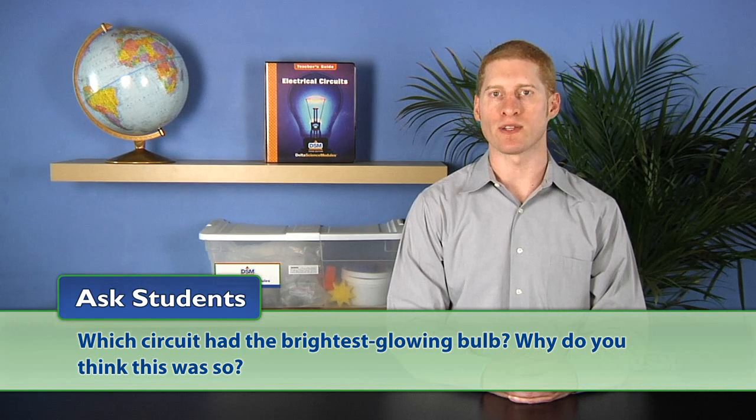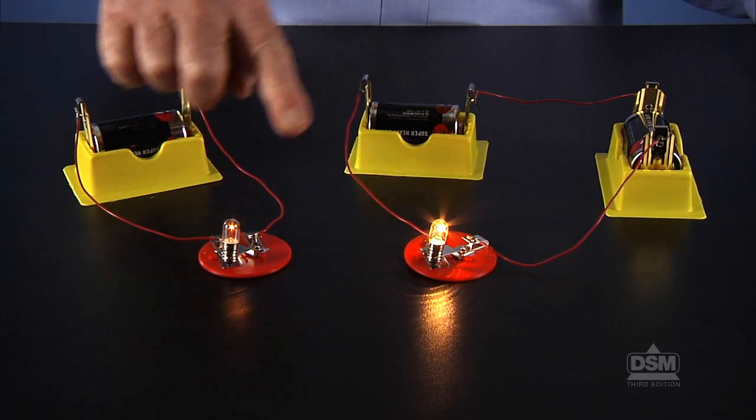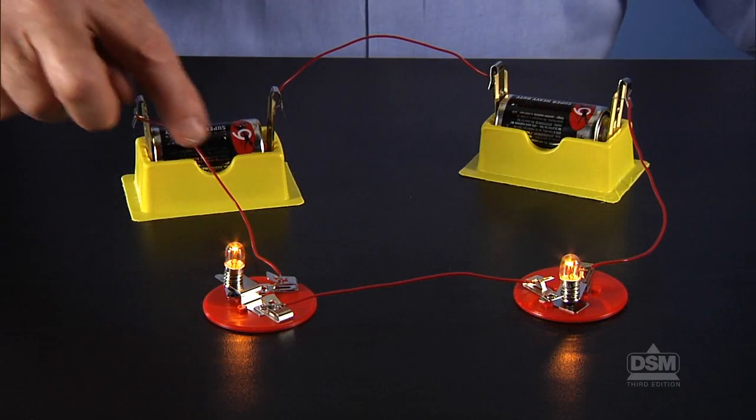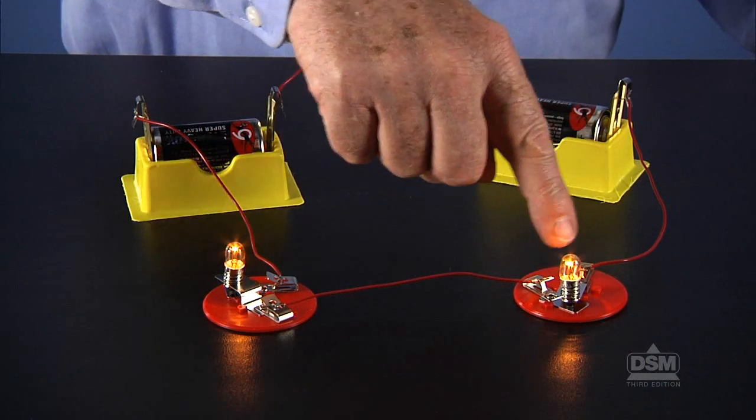Then ask, which circuit had the brightest glowing bulb? Why do you think this was so? Students should note that circuit B had more batteries, which provided more current and made the bulb glow brighter. Circuit C also had two batteries, but the two bulbs had to share the current they provided, resulting in a duller glow.